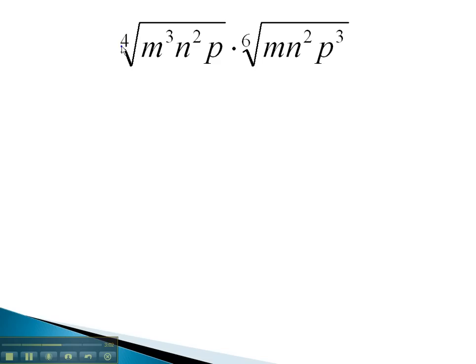In this first problem, we have an index of 4 and an index of 6. Thinking about those as a denominator, the common denominator would be 12. This means we need to multiply the first index by 3, and the second index by 2, to get a common index of 12 over the entire thing.